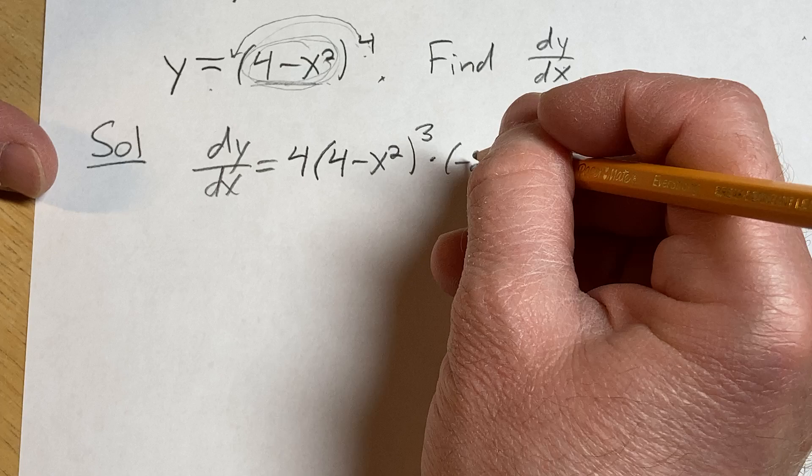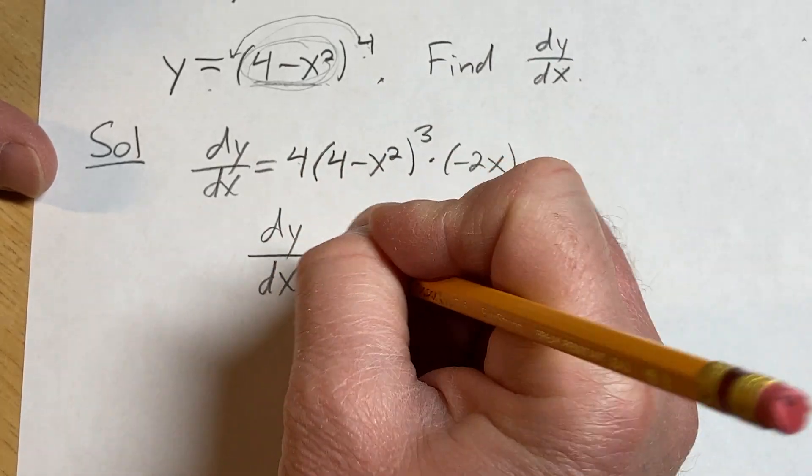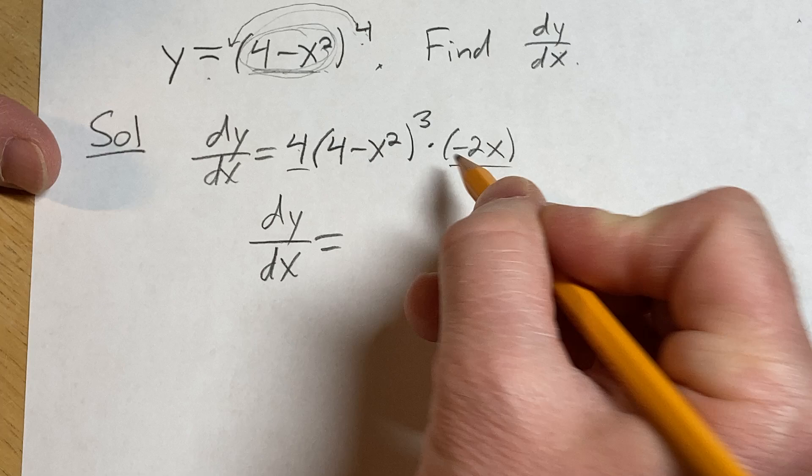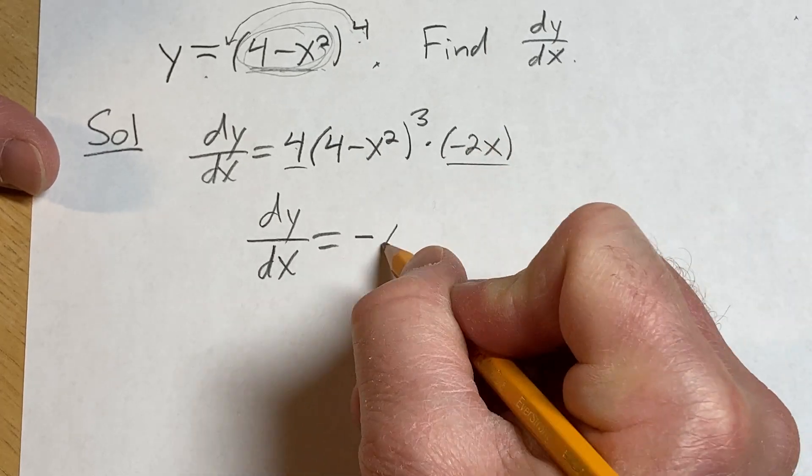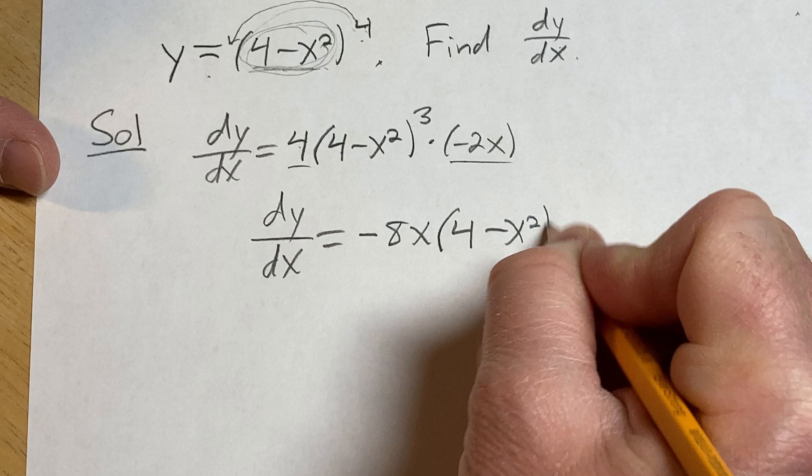And then we just multiply here, the 2 times the 4, so dy/dx. Let's go ahead and put this in the front. 4 times negative 2x is negative 8x, times 4 minus x squared, and that's cubed.